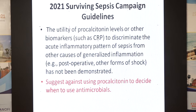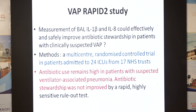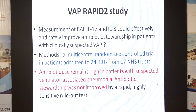What about VAP rapid studies? BAL interleukin-1-beta and interleukin-8 — could they predict VAP? A multicenter RCT across 24 ICUs and 17 NHS trusts found antibiotic use remained high despite these interleukin studies. In COVID patients, counts are normal, everything is normal, CT shows COVID — yet antibiotics are started anyway, and procalcitonin comes back negative, but antibiotics continue. What is the point of doing procalcitonin if you're going to give antibiotics regardless?